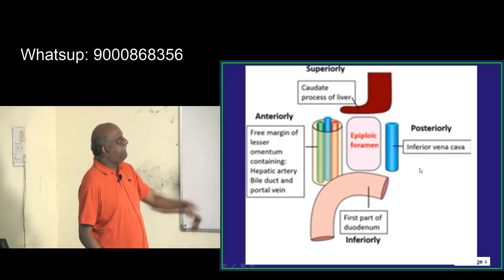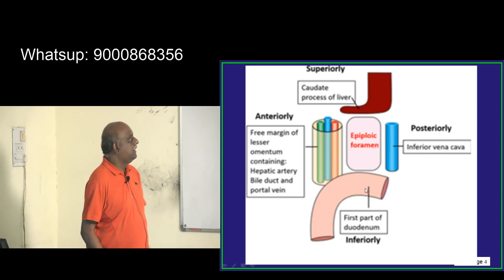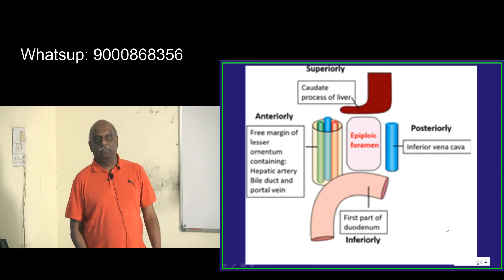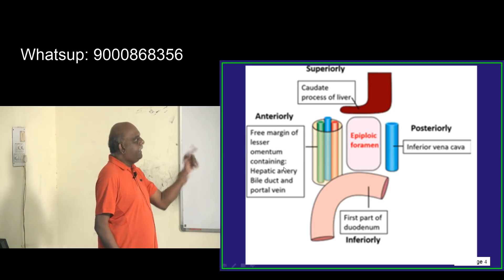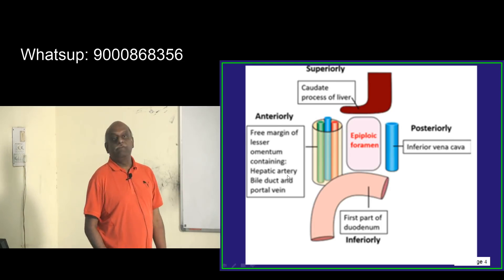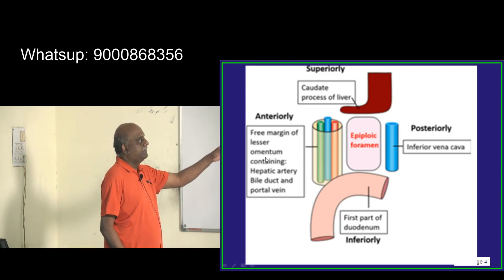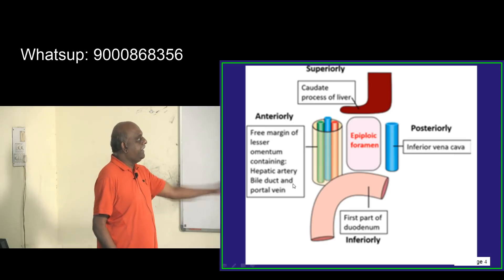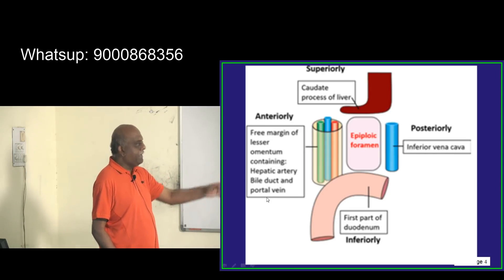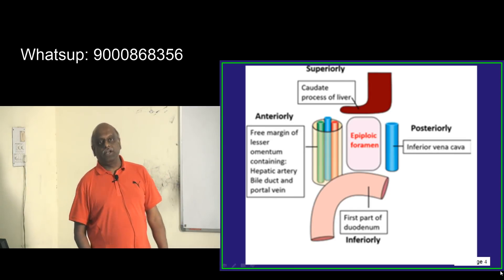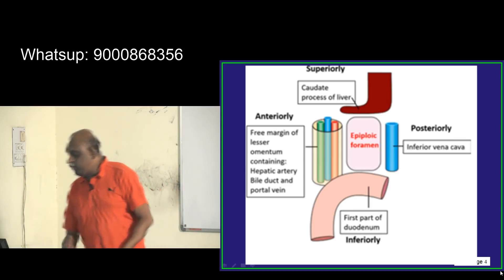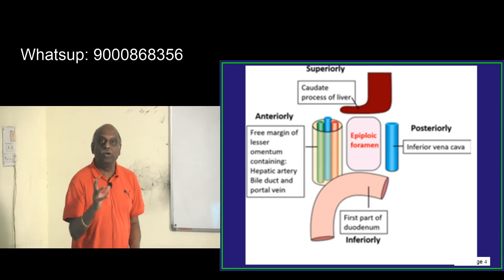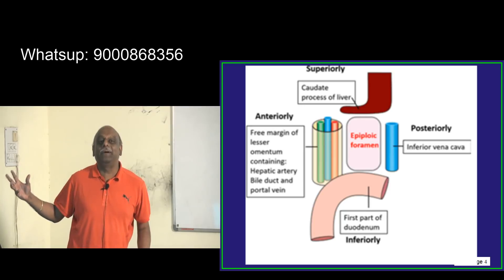Posteriorly there is an inferior vena cava. Inferiorly you have the first part of the duodenum, and anteriorly the free margin of the lesser omentum, which contains the hepatic artery, bile duct, and the portal vein. That is called the Pringle's maneuver.